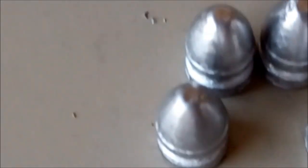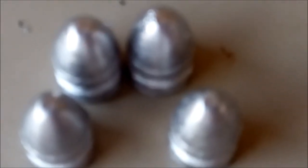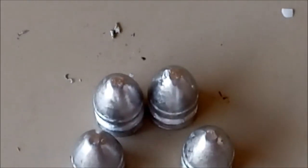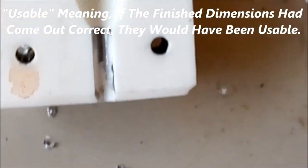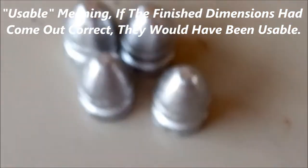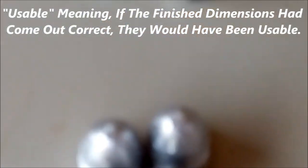And let's see, back to the hollow pointed nine millimeter. On this one, I also cast, I think it was 10 bullets. I got two of them inside the house. I tried to run them through my sizing die and they were too small to run through the sizing die. It just fell right through. Anyways, I got four good usable bullets out of this hollow pointed mold and the remainder were not usable.